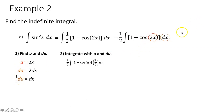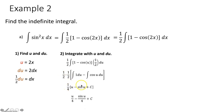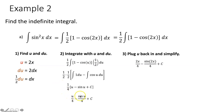The integral of 1 du is u plus c, and the integral of cosine of u du is sine of u plus c. The c's combine into one constant of integration, and the two one-halves multiply to give one-fourth. Distribute the one-fourth to u, to sine of u, and to c (a constant times a constant is still a constant). Finally, substitute 2x back in for u: 2x over 4 simplifies to x over 2. We have successfully evaluated the integral of sine squared x dx.